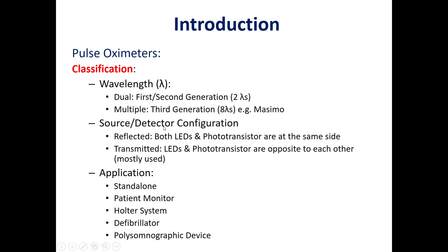Another classification of pulse oximeters is according to the position of the source and detector in the probe. We have two types: the reflected type and the transmitted type.